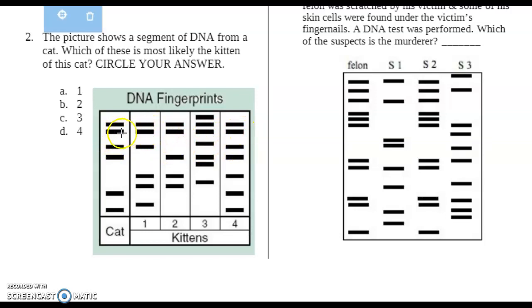It seems to be a common band there. And this one as well. But number four is most closely related. It has this one and this one that we definitely do not see in those others. So kitten four would most likely be the kitten to that mama cat. So D would be the correct answer.